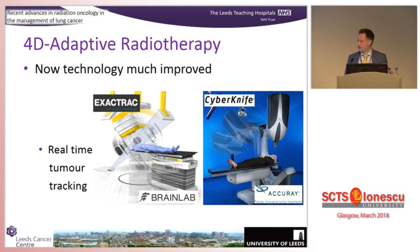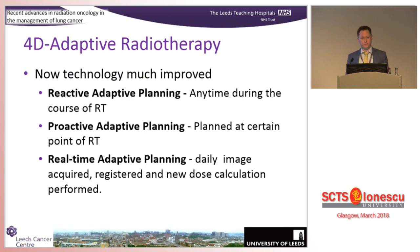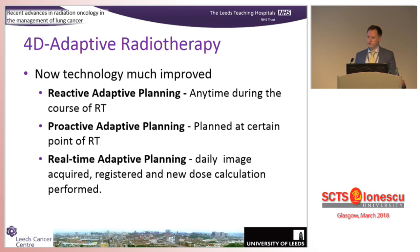We're now moving to the stage where we can deliver 4D adaptive radiotherapy. When it comes to adaptive radiotherapy, there are three classifications. The first is reactive: we see a patient on the bed, perform an image, and that image shows there's been a big change, so we have to react and replan that patient - which can take a day or two. So that patient will either carry on with a suboptimal plan or we have to stop treatment and change. Reactive is what's currently standard in most centres.